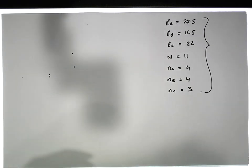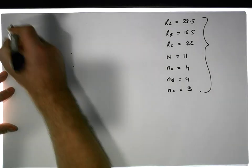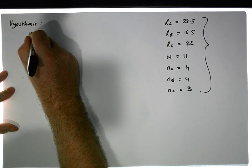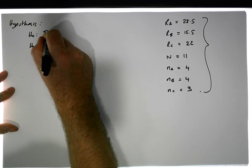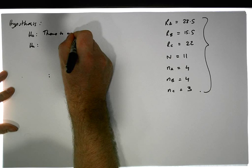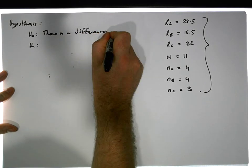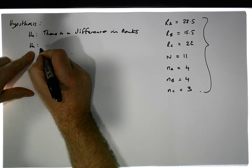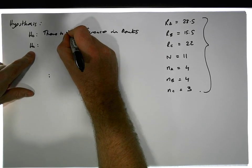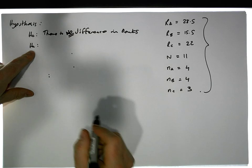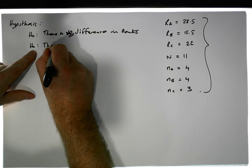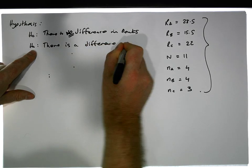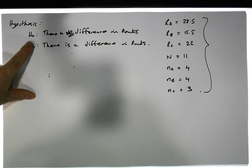Now we're ready to do the hypothesis test. The null hypothesis is there is no difference in the ranks across the groups, whereas the alternative hypothesis is that there is a difference in the ranks across the groups.